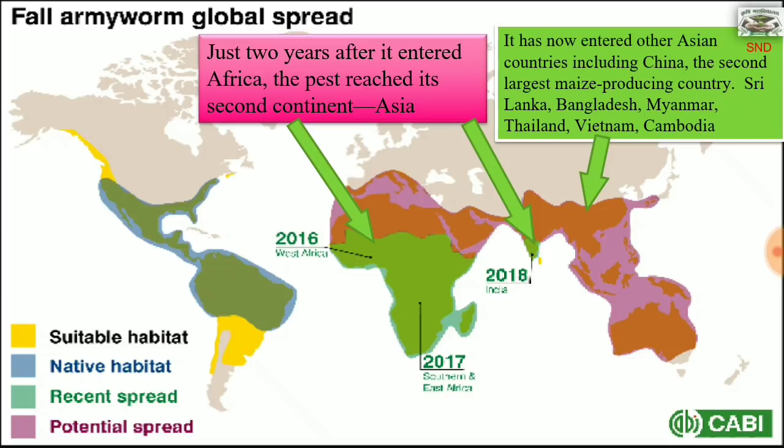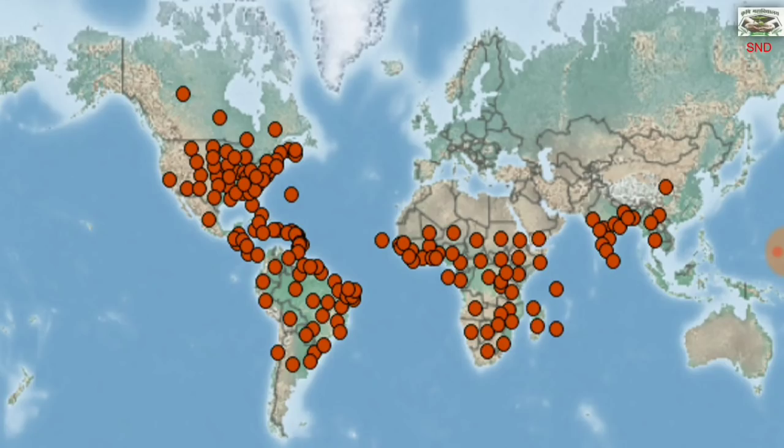Within two years of entering Africa, this pest reached its second continent — Asia. It has entered Asian countries including China, which is the second largest maize-producing country, Sri Lanka, Bangladesh, Myanmar, Thailand, Vietnam, and Cambodia. On this map you can see the red spots where the incidence of fall army worm larvae can be seen. This pest has caused havoc.